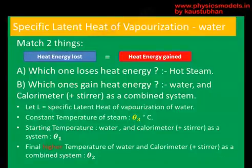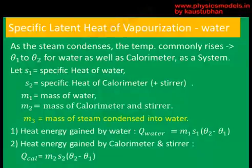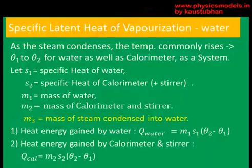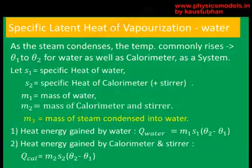When the steam condenses into the water, we have to measure the mass of that water again. When we measured the mass of the water in the beginning, there was no steam in it; at the end it had steam. So to find out how much steam condensed, we must measure that mass again. The steam lost heat, it became colder, and the water and calorimeter became warmer — as long as we remember that, we are on track.